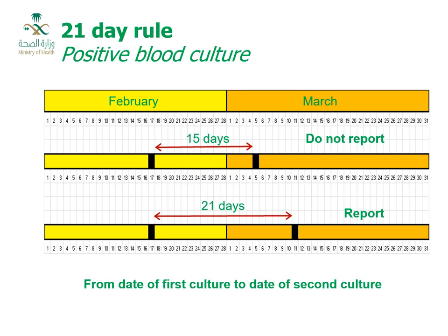Here are examples of how to apply the 21-day rule for positive blood culture. In the first example, the gap between two positive blood cultures is 15 days — less than 21 — so the second is not reported. In the second example, the gap is 21 days or more, so the second positive blood culture is reported.